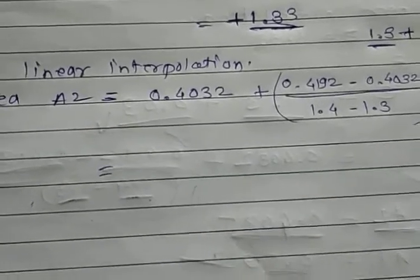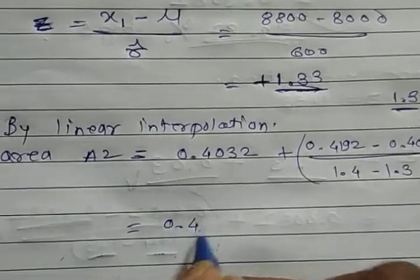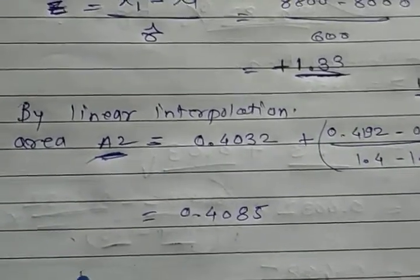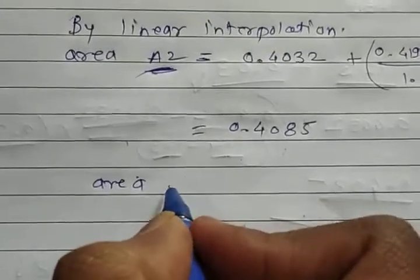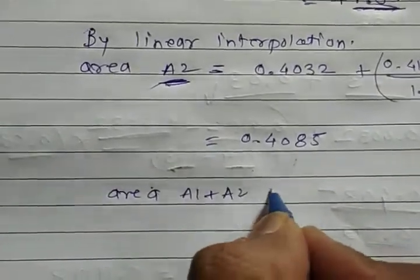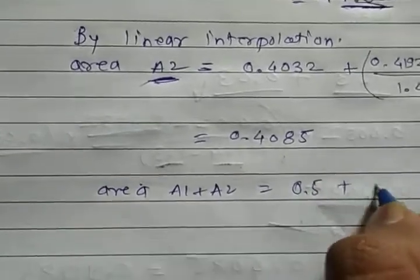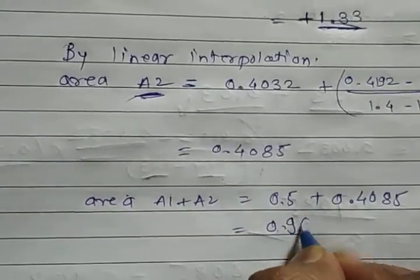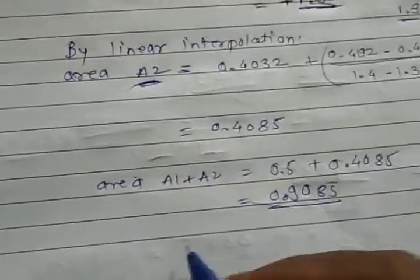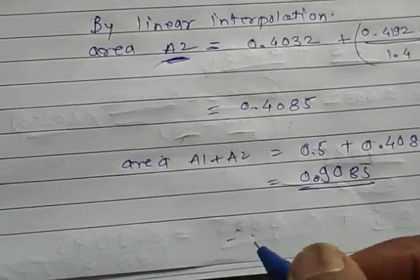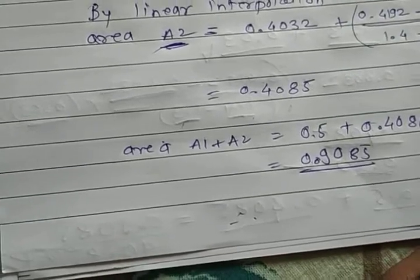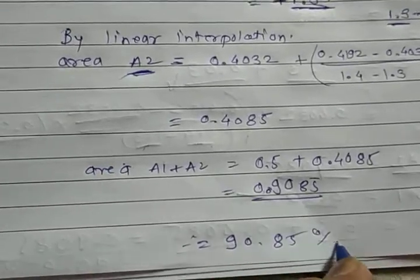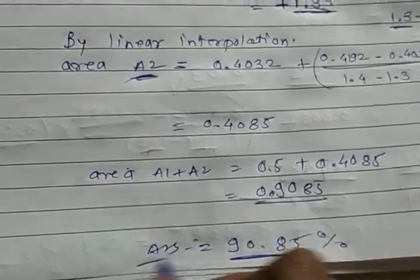Summing up, A2 = 0.4085. Adding A1 + A2: 0.5 + 0.4085 = 0.9085. Therefore, the number of bearings likely to fail within the first 8,800 hours is 90.85 percent. That is the final answer.